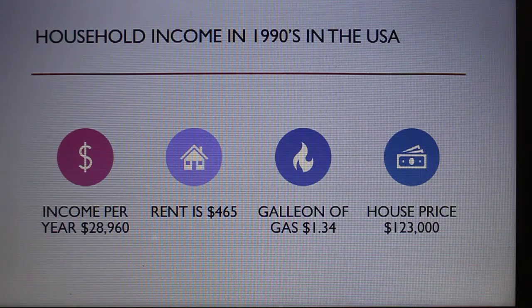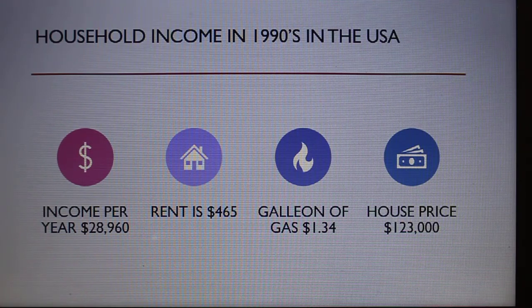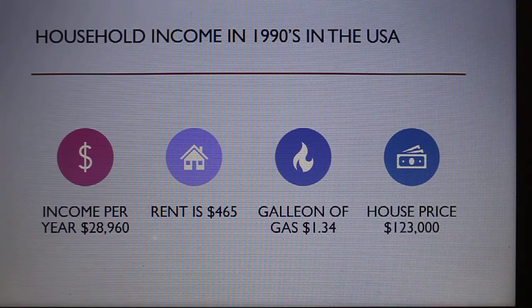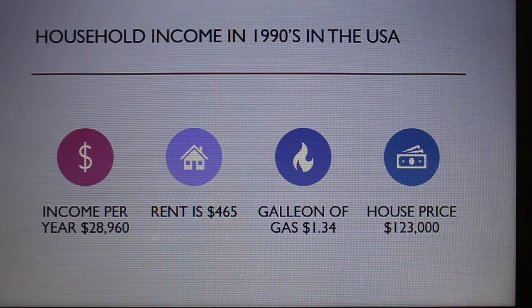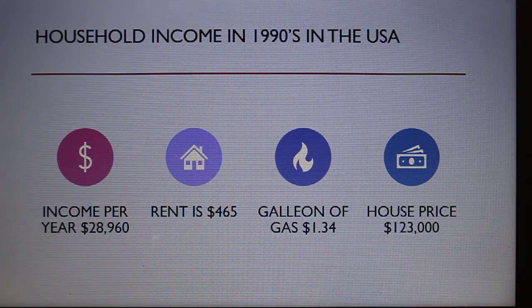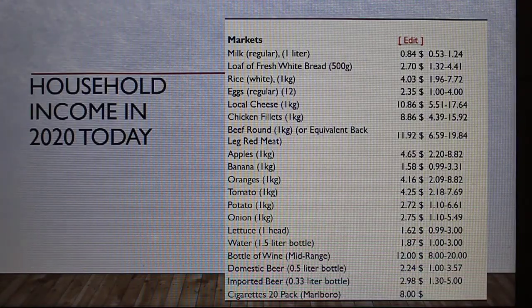However, house prices had skyrocketed to $123,000. In the 1930s, a yearly income could essentially buy a property outright, but now with an income of $28,000 and a house price of $123,000, that's roughly four years of average income. So the house price is causing the financial situation to become quite unaffordable. Let's now have a look at what happens today.